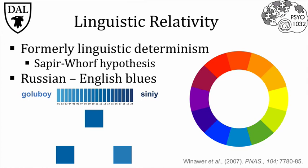This shows, using an objective categorization task, that having words for a category made the task easier. So there is some evidence of an influence of language experience on perceptual tasks, but these differences tend to be small and restricted to certain types of tasks. That's why the term linguistic determinism fell out of favor, and linguistic relativity is more commonly used.